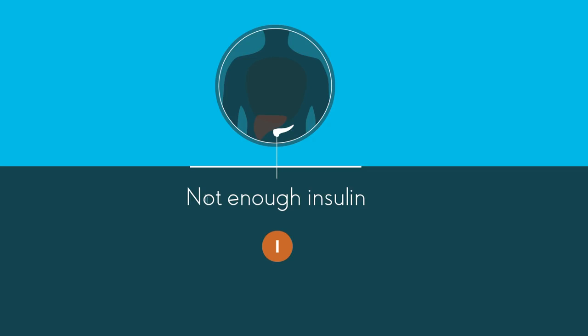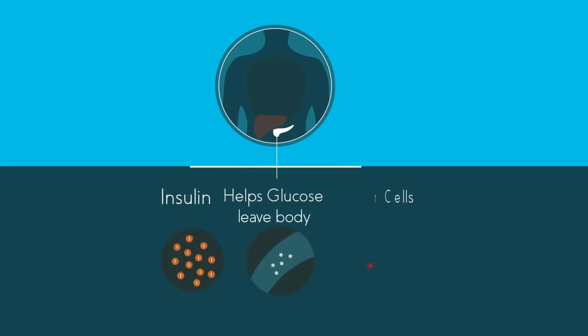Insulin helps glucose leave our blood and enter into our body's cells. Let's have a look at this process in a little more detail.